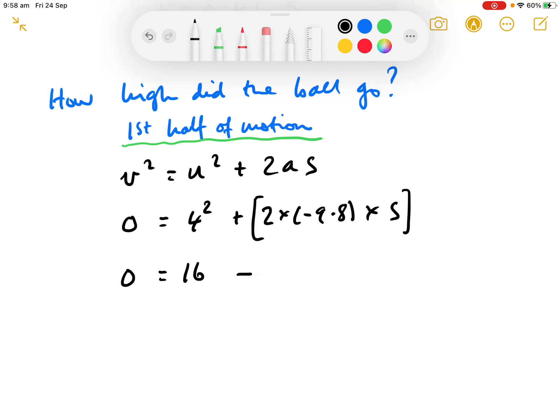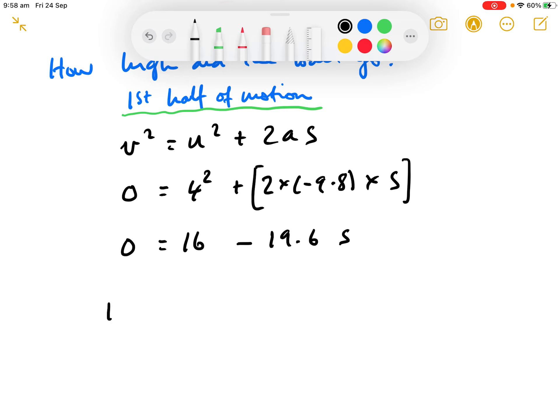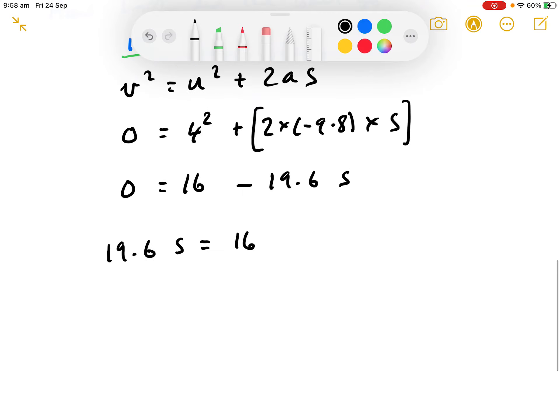That's going to be minus 2 of those. So, minus 19.6s. So, 19.6s is equal to 16. S is 16 over 19.6.